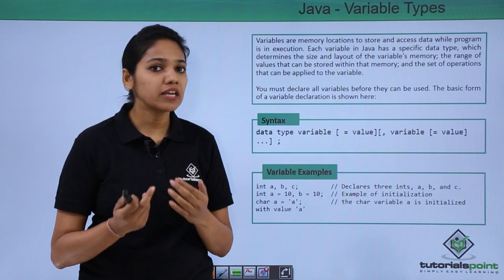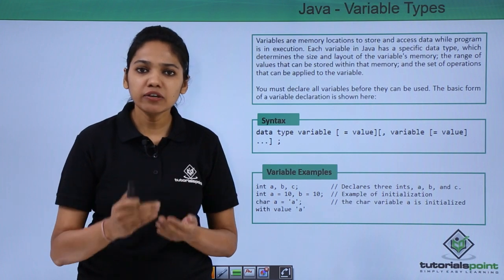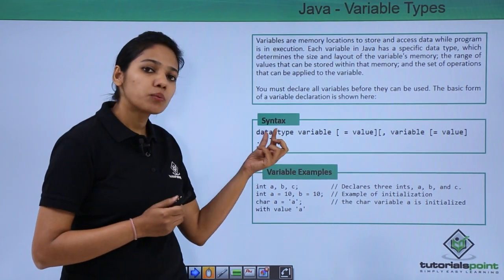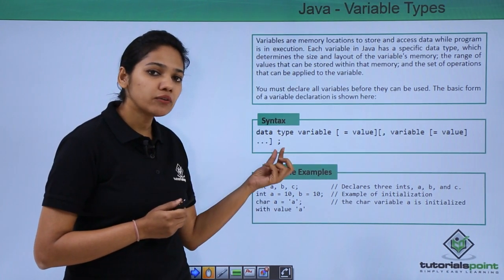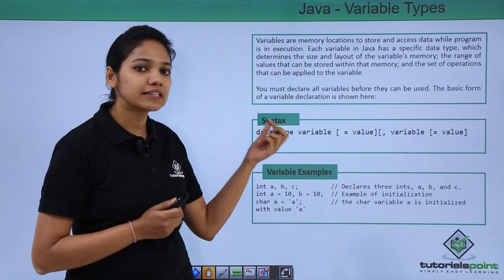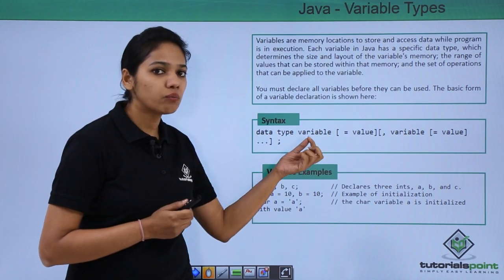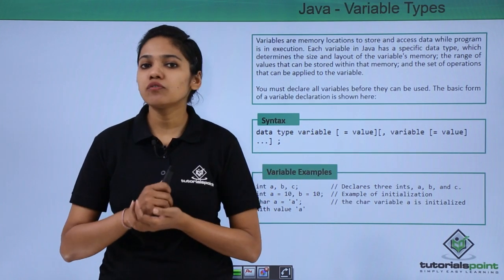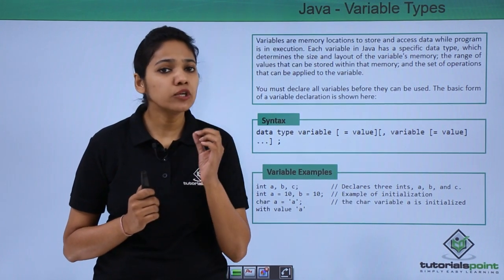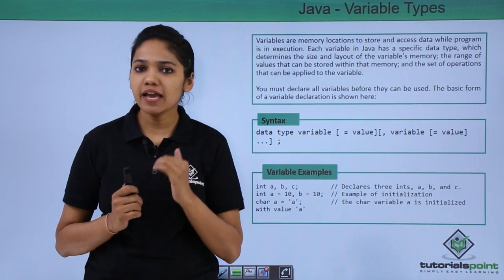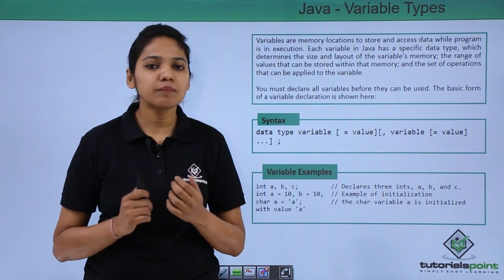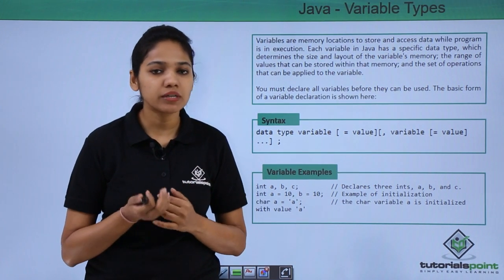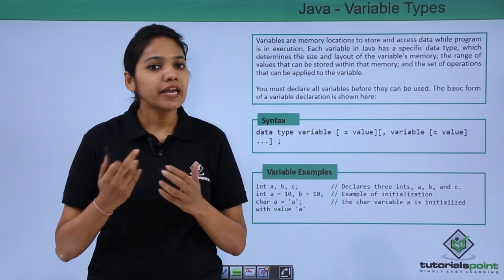But it may also be array or string or object reference. For any of these, you need to first provide what kind of data it is - that is the type of data, then the variable name. In our case of human, where we have taken an example, every human has certain data and behavior. This data may be the name of the human, the age of the human, and so on.